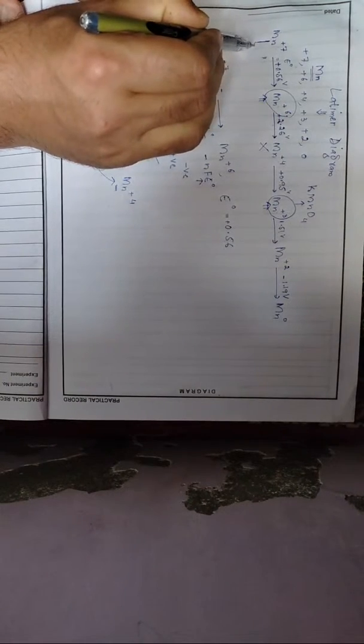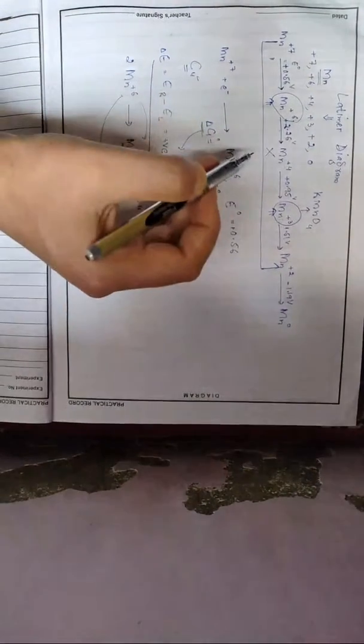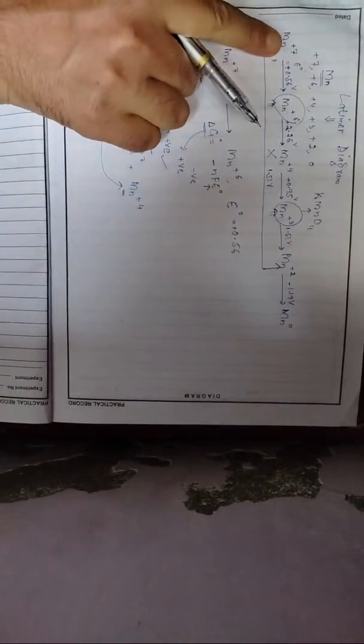We can also show the direct conversion of Manganese plus seven to plus two. The electrode potential value for this direct conversion of Mn⁺⁷ to Mn⁺² is 1.51 V. This is important information commonly tested in exams.